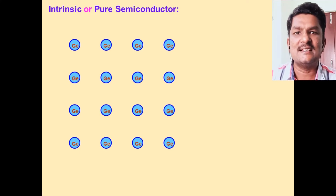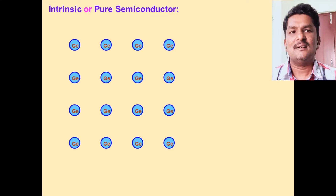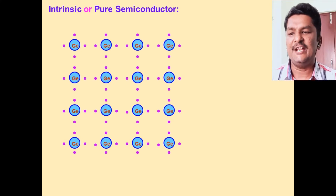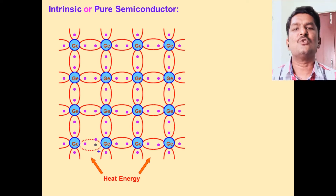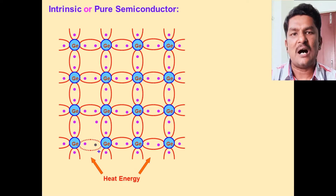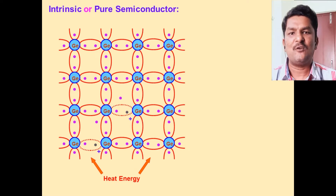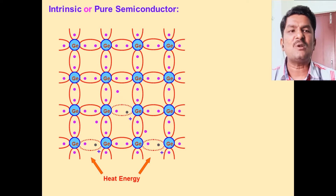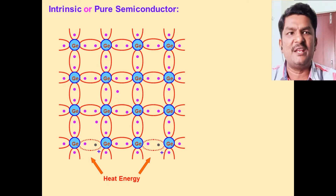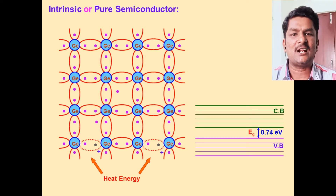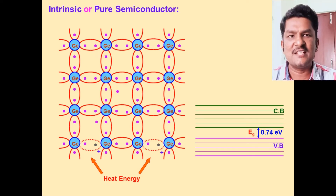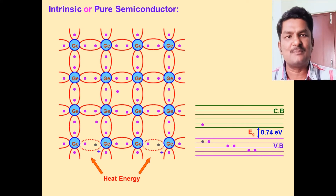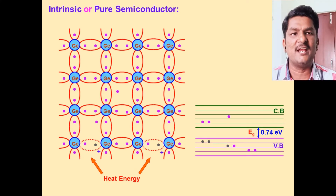Consider a germanium atom. The atomic number of germanium is 32 and its valency is 4, so germanium is ready to form four covalent bonds with neighboring atoms, forming a germanium crystal. When some amount of heat energy is given to the germanium crystal, the covalent bond breaks. The deficiency of an electron is called a hole. In the diagram, the dotted lines indicate the breaking of covalent bonds.